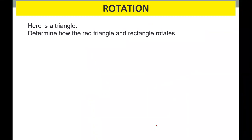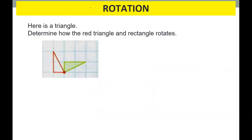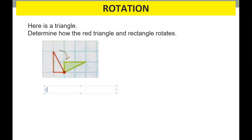Here is a triangle. Tell me how the red triangle and rectangle rotate. So this is the start — this is our origin. It went this way. So we will say: 90 degrees clockwise.